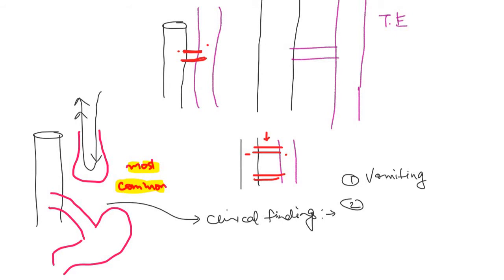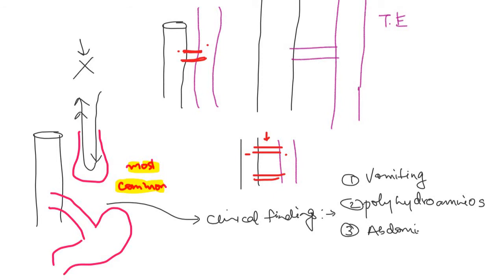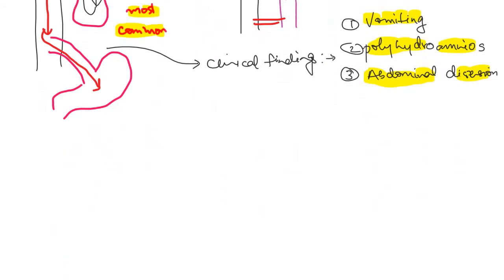In a pregnant female carrying an affected fetus, the fetus cannot swallow amniotic fluid, so there will be polyhydramnios — a classical finding with tracheoesophageal fistula. Third, there will be abdominal distension: air entering through the trachea passes into the stomach via the lower fistula, causing distension.